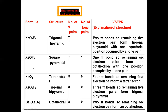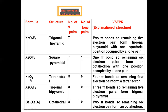Xenon oxytetrafluoride (XeOF₄) has a square pyramidal structure. There are seven electron pairs and one lone pair. One pi bond means six electron pairs form an octahedral arrangement with one position occupied by the lone pair. Xenon tetraoxide (XeO₄) has a tetrahedral structure with eight electron pairs and no lone pairs; four pi bonds mean four electron pairs form a tetrahedron.